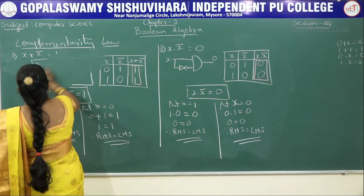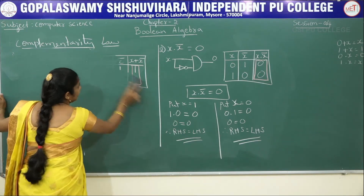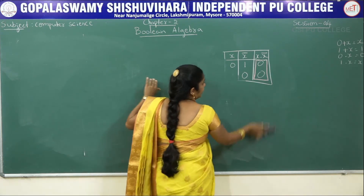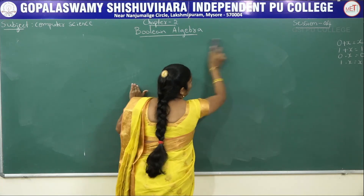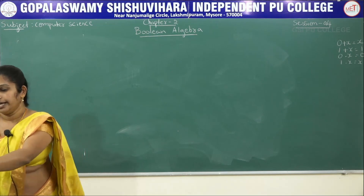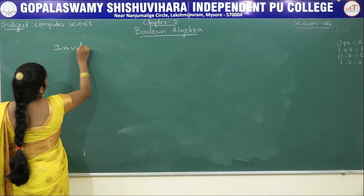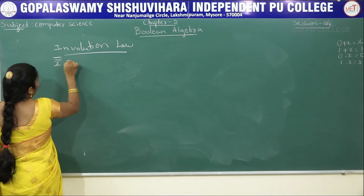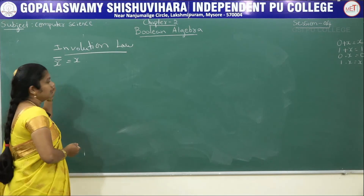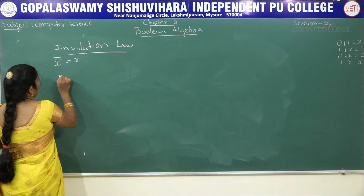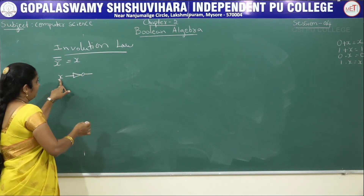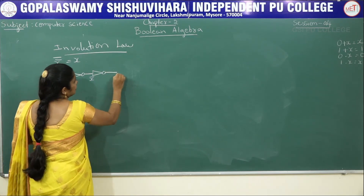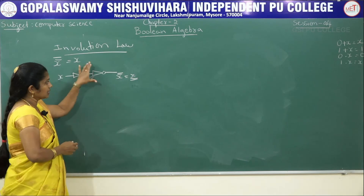Next, we move to involution law. The involution law states that if you complement a variable twice, you get back the original value: x double bar equals x. For the circuit diagram: starting with x, after the first NOT we get x bar, and after a second NOT we get x double bar, which equals x.